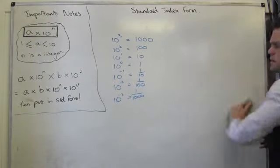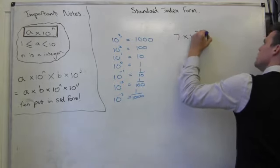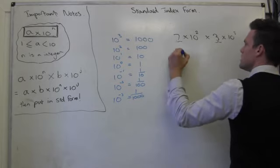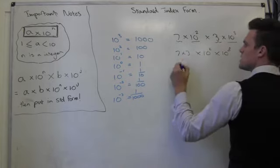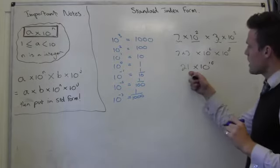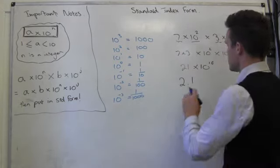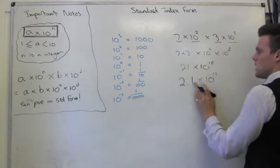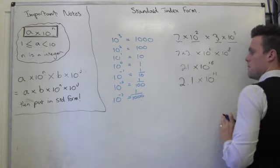Let's do 7 times 10 to the 2 times 3 times 10 to the 8. I rearrange: 7 times 3 times 10 to the 2 times 10 to the 8. That's 21 times 10 to the power of 10. But this is index form, not standard index form — you get 2 out of 3 marks for that. To get the third mark, I have to put this into standard index form where the 'a' value is between 1 and 10. So 21 becomes 2.1, and I compensate by making it 2.1 times 10 to the 11.